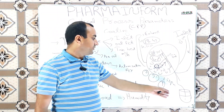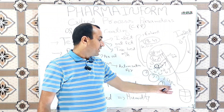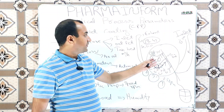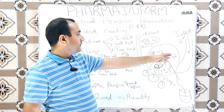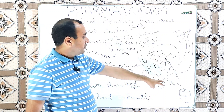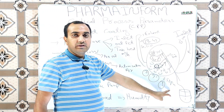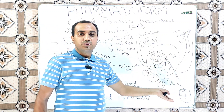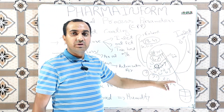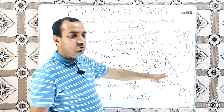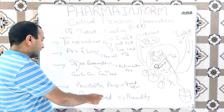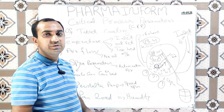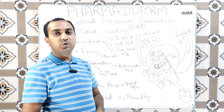Peristaltic pump speed is also critical. As discussed earlier, if we are running at 25 RPM we will adjust inlet air temperature according to the supplied coating solution to ensure smooth coating. Pan parameters include pan load and pan speed.